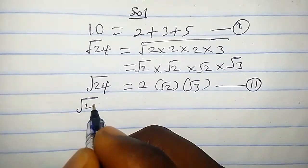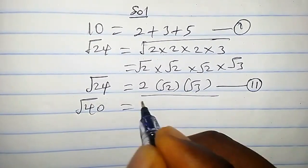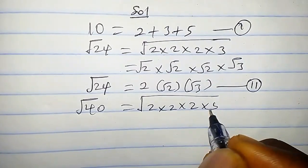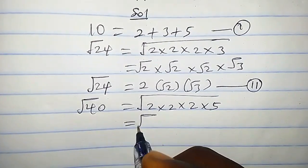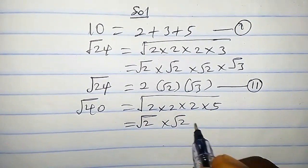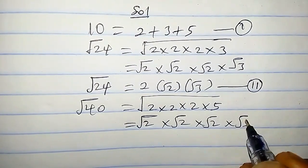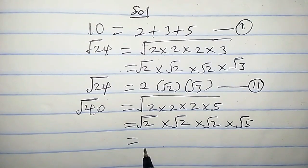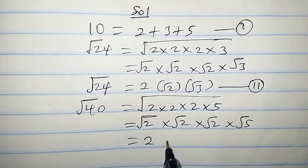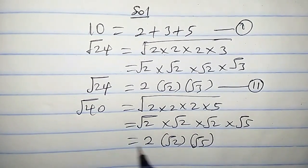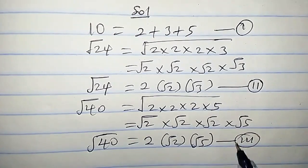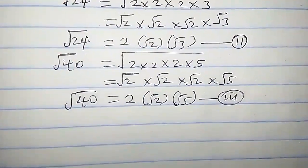Now let's consider square root of 40. We can write it as √(2×2×2×5), which can also be written as √2 times √2 times √2 times √5. So this equals √2 times √2, that is √4, and √4 is 2, times √2 times √5. Let's call this equation 3.